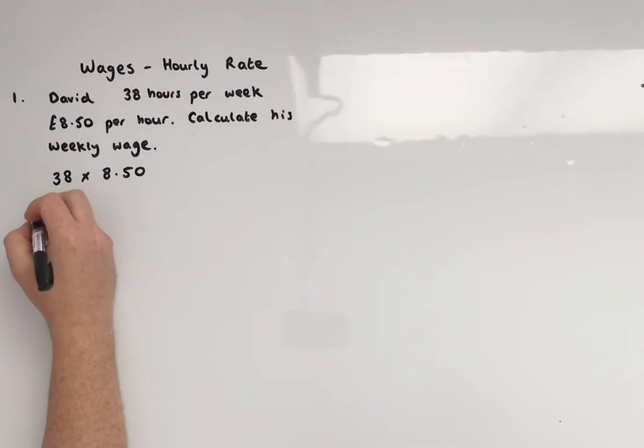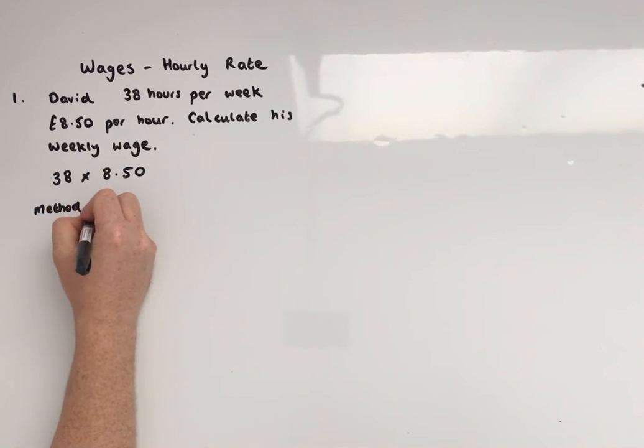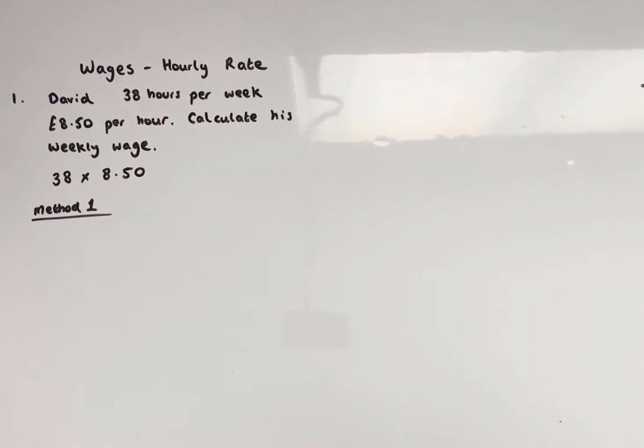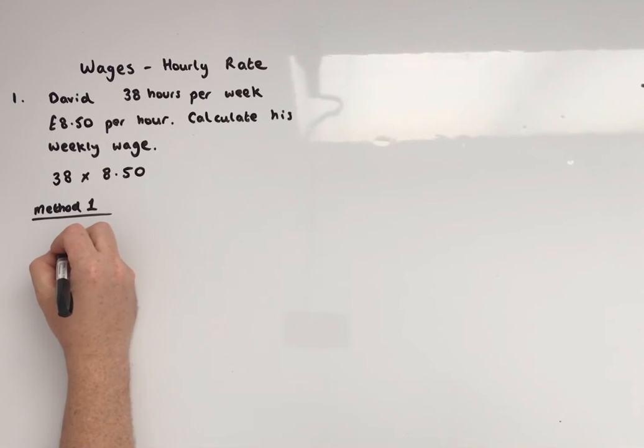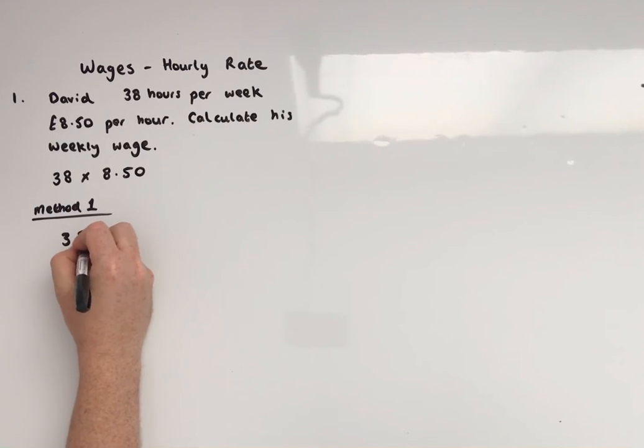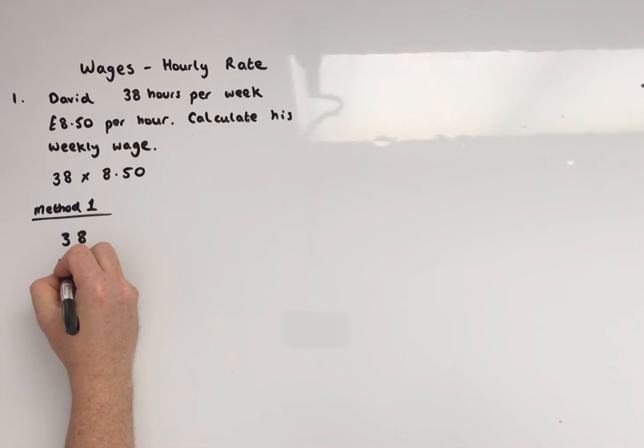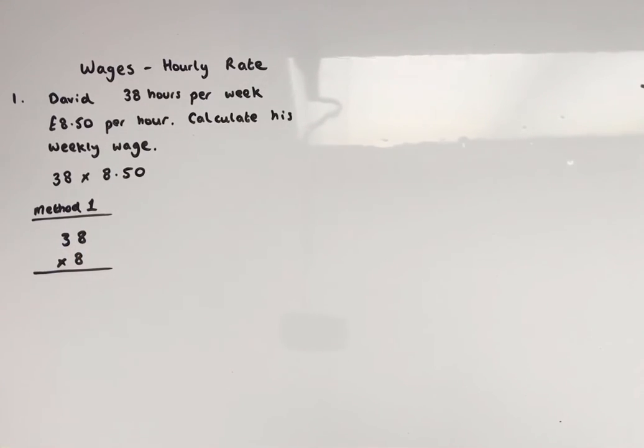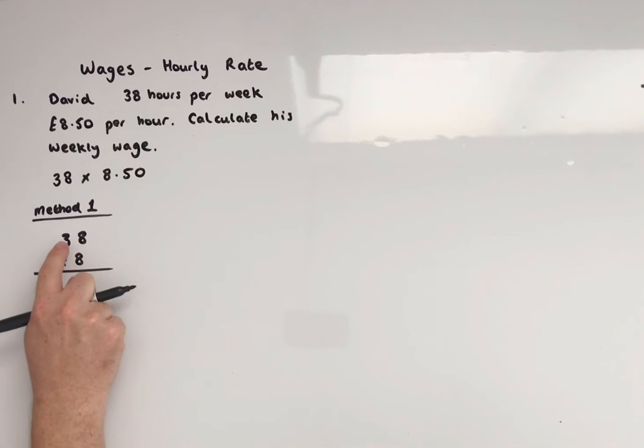Okay, so the first method. Let's calculate the whole pounds using a tower sum. I think tower sum is the most common name for this, certainly in central Scotland. Right, so 38, 8 pounds.